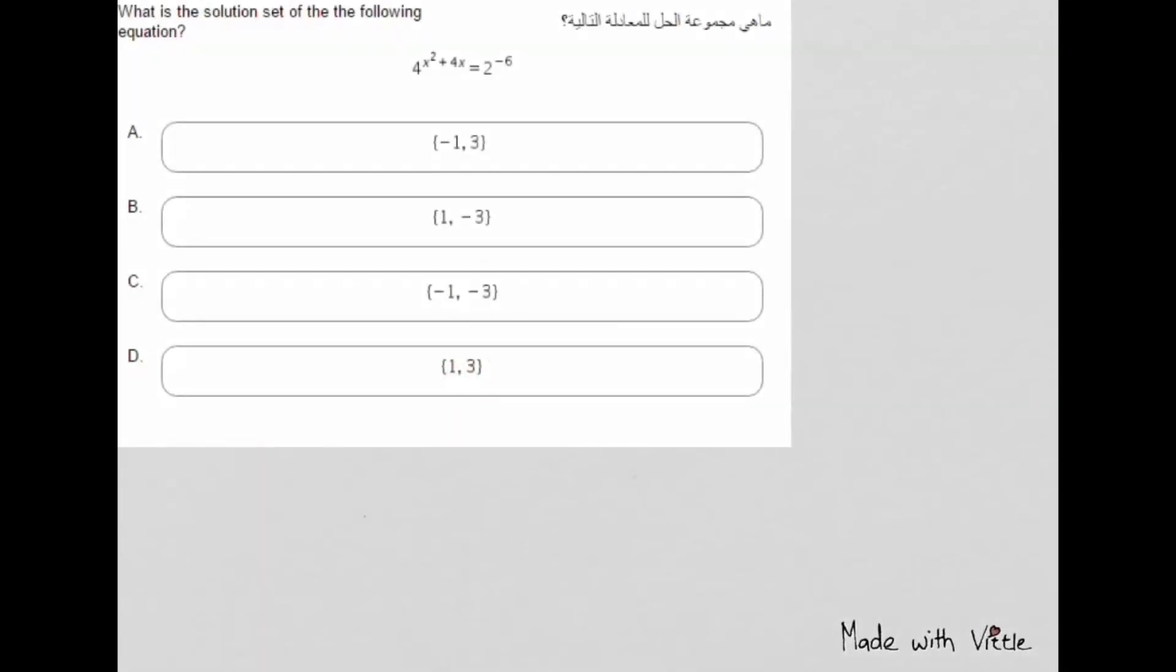What is the solution set of the following equation? Before solving this question, let's start with some basics. As we already know, if we have b to the power of x which equals b to the power of 3, since b equals b, that means the two powers are equal. So x equals 3.